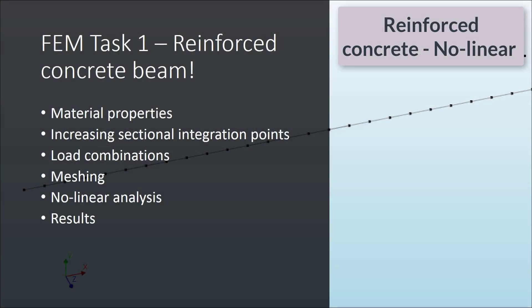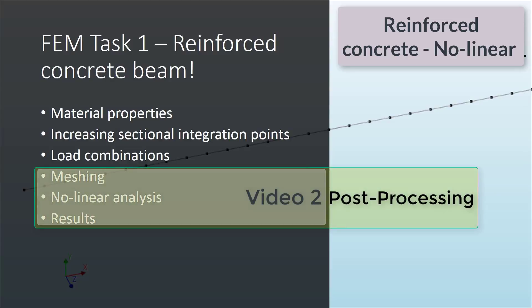In the last video we saw how to define the material properties, increase the section and integration points to have better discretization of the cross section, and define some load combinations to load our beam until failure. In this video we are going to see how to mesh the beam, assign the different properties and data, then send the input parameters to the computational engine to get the results of our analysis and have some graphical interpretation in the viewing window.